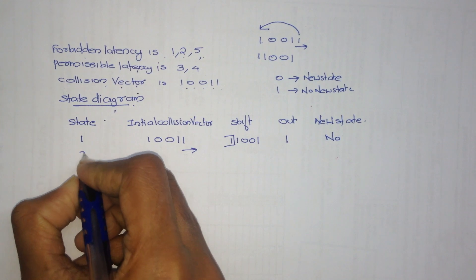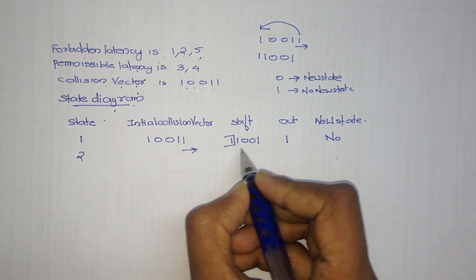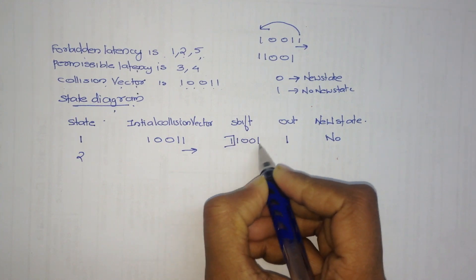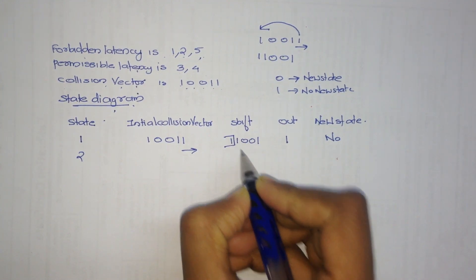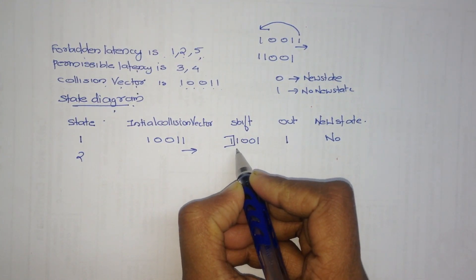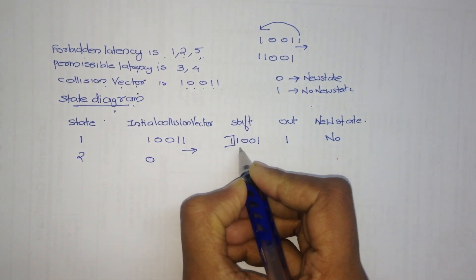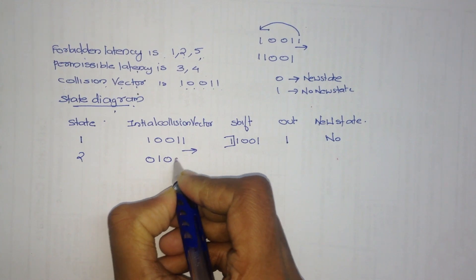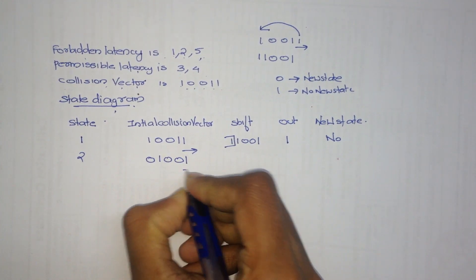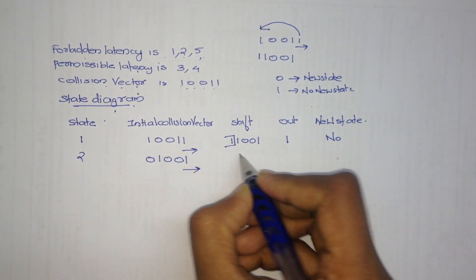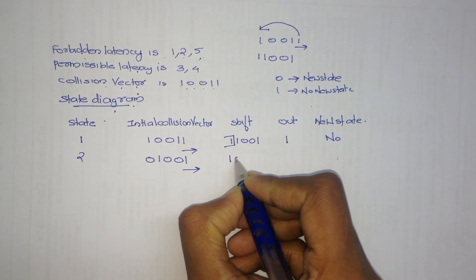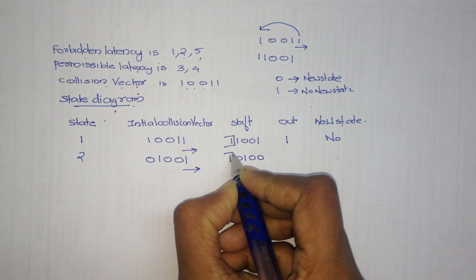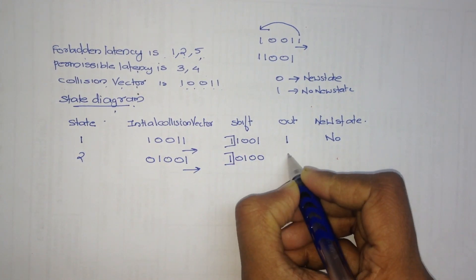In the next step, we write the initial collision vector again but change the omitted 1 to 0, so it becomes 1, 0, 0, 1. Remaining values are the same: 1, 0, 0, 1. We perform right shift again, which gives 1, 0, 1, 0, 0. Now we omit the first value, which is again 1. Therefore no new state is formed.